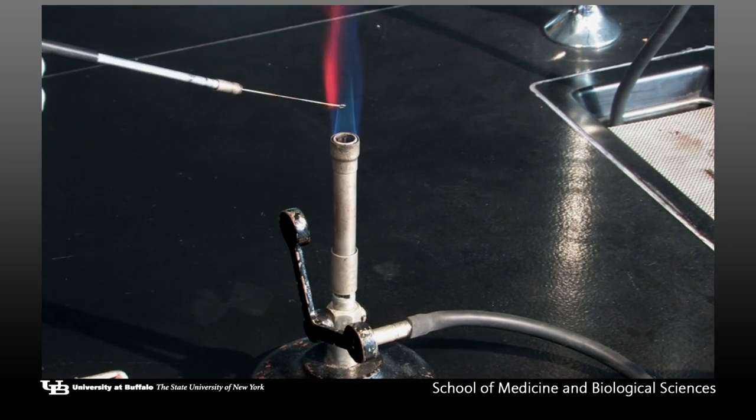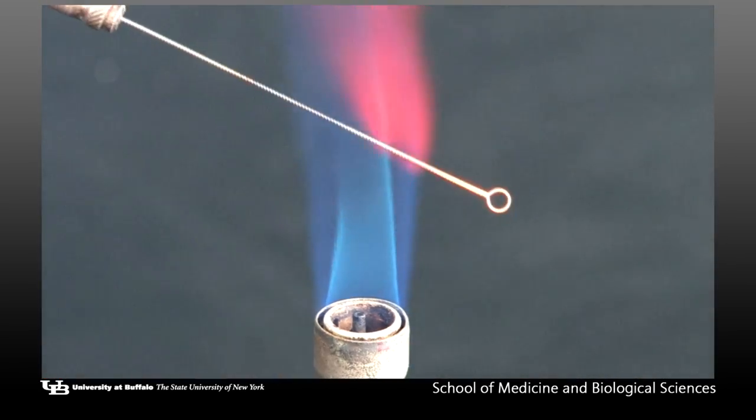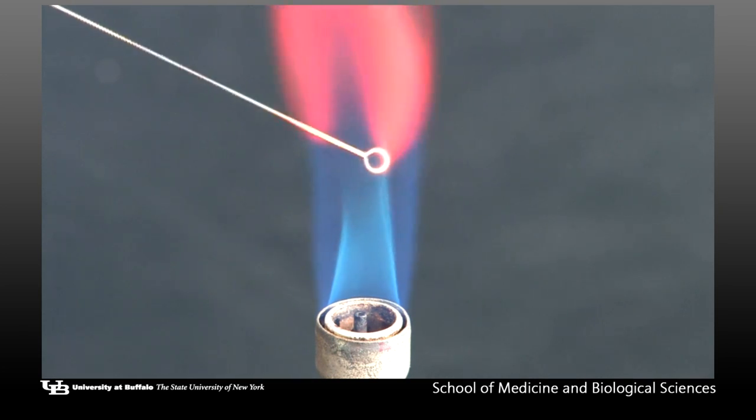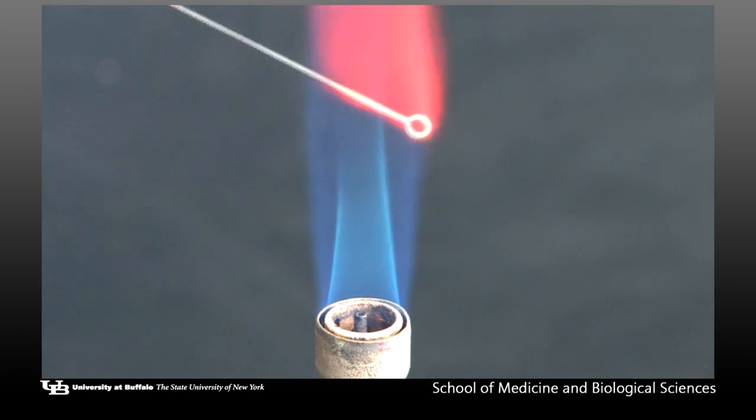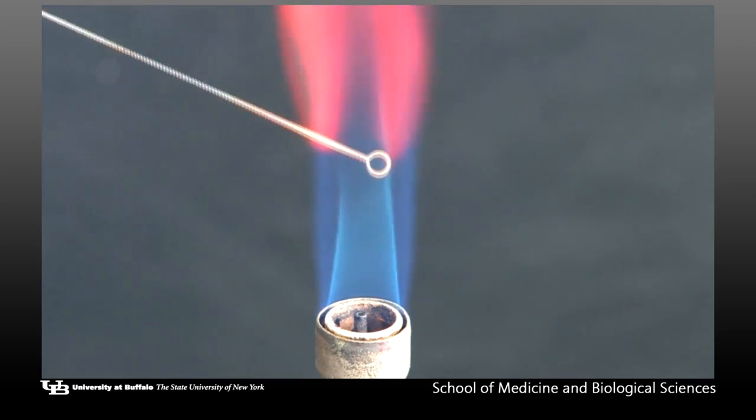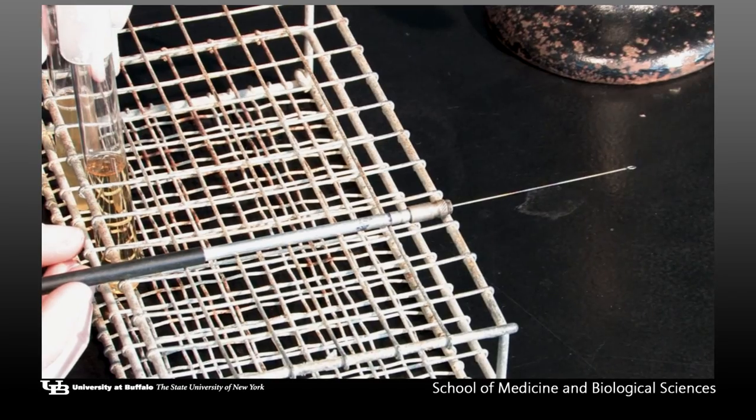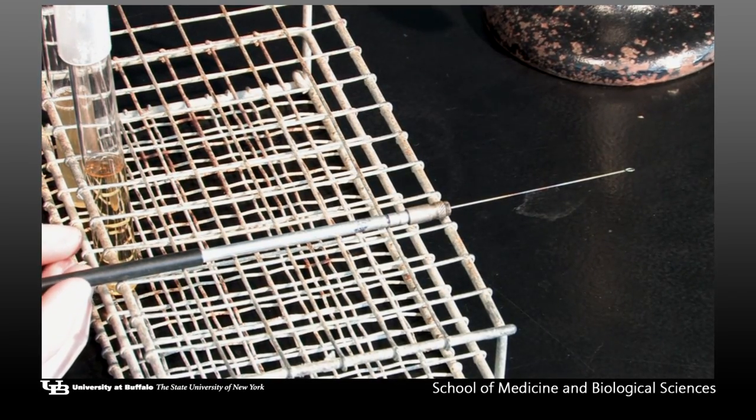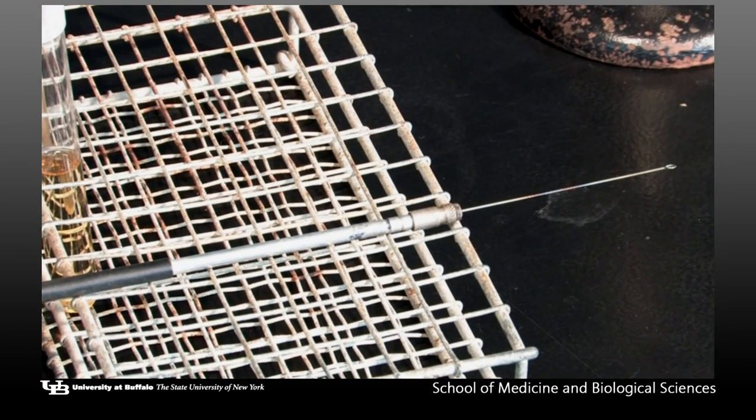Sterilize inoculating loop by heating in the Bunsen burner flame. Flame first the loop end and then the entire wire, making sure that all parts are heated to an orange color. Allow the wire to cool before touching it since it will burn you, or placing it on or in a culture which will cause the dispersal of microbes into the air.